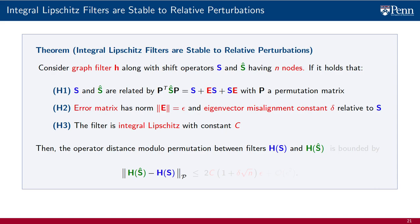We then have that the operator distance modulo permutation between filters H of S and H of S-hat is bounded by two times the integral Lipschitz constant C of filter H, multiplied by 1 plus delta times the square root of n — where delta is the eigenvector misalignment constant between E and S and n is the number of nodes in the graph — times the norm of the error matrix E, which is the relative distance modulo permutation between the graph shift operator S and S-hat. This is a first-order bound, as there are higher-order terms that vanish at least quadratically.